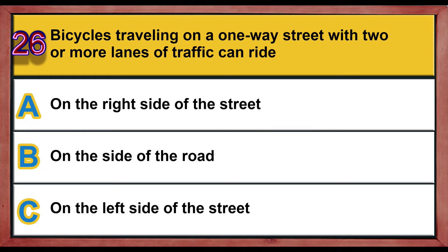Question 26. Bicycles traveling on a one-way street with two or more lanes of traffic can ride: A. On the right side of the street. B. On the side of the road. C. On the left side of the street. Correct answer is C: On the left side of the street.